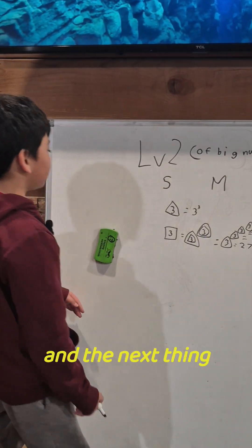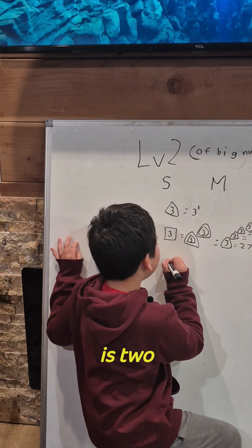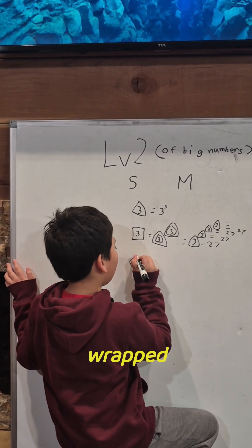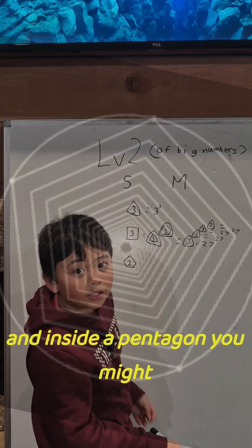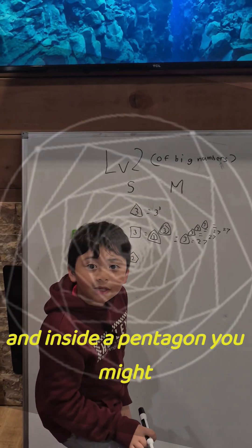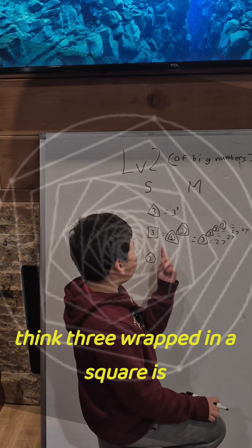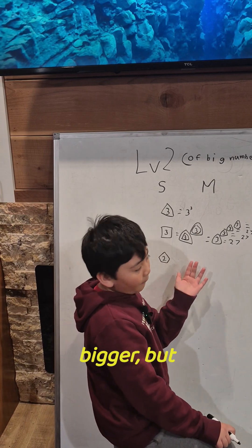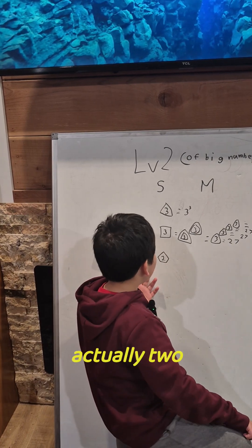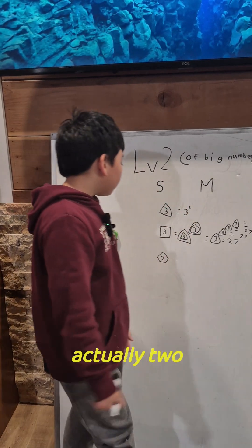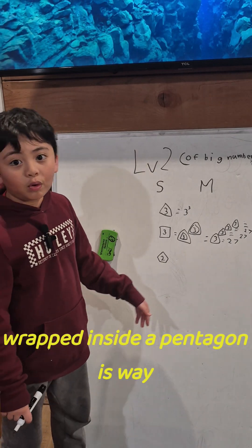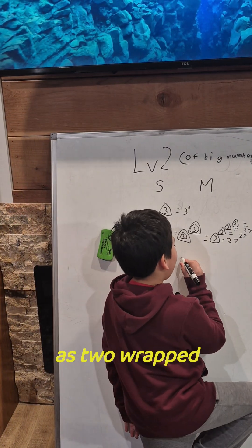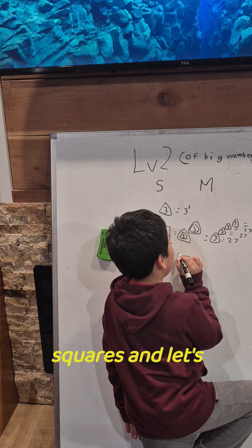The next thing is 2 wrapped inside a pentagon. You might think 3 wrapped in a square is bigger because the base number is bigger. But actually 2 wrapped inside a pentagon is way bigger, because that's the same as 2 wrapped in 2 squares.